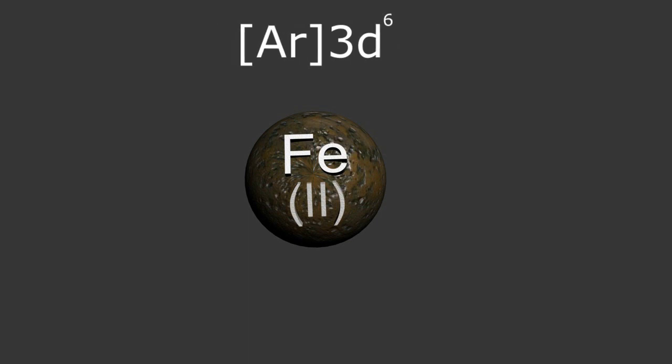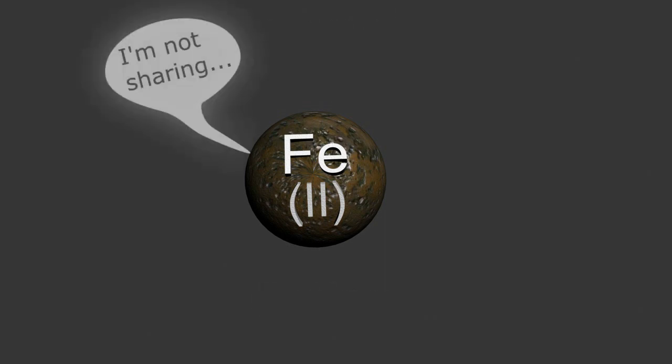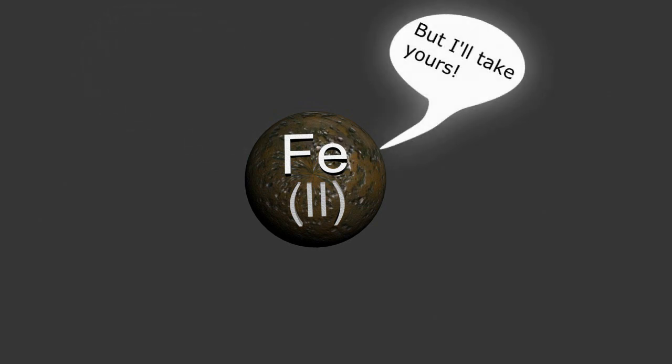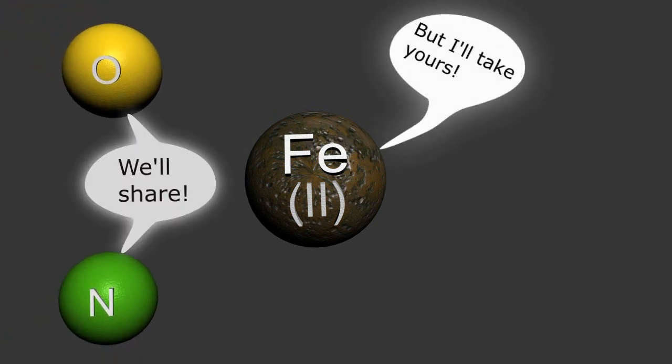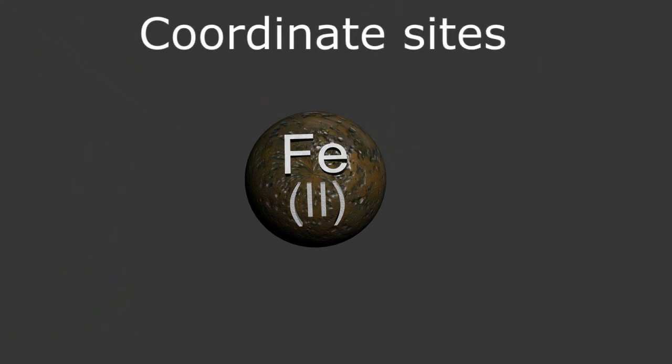These positively charged metal ions, or cations, then become very electron-selfish, unwilling to share their valence electrons with their fellow atoms, but are more than willing to take electrons from other atoms, most notably oxygen and nitrogen. They receive these electrons at what we call coordinate sites of which iron has six.